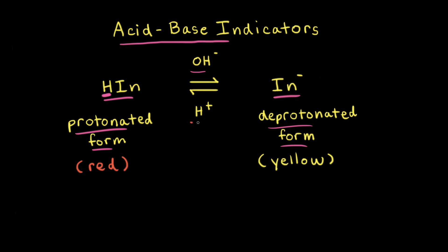If we add an H⁺ to the deprotonated form, we would make the protonated form of the acid-base indicator. For this hypothetical acid-base indicator, the protonated form is red and the deprotonated form is yellow.